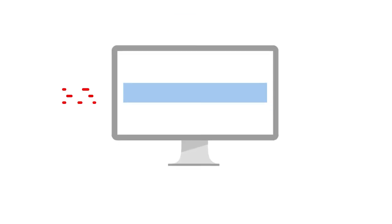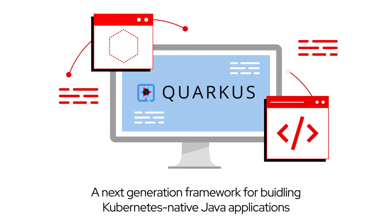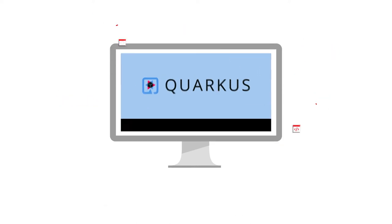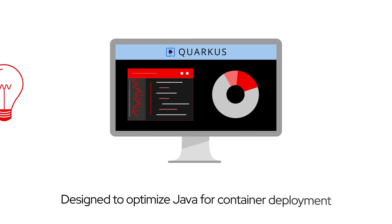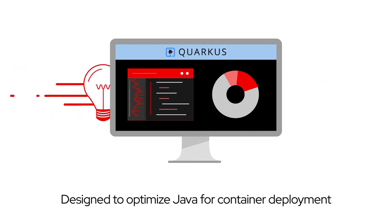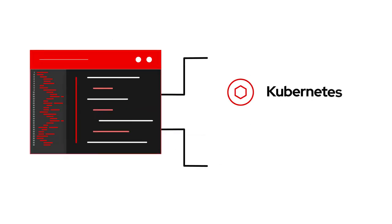Added to that, the Red Hat build of Quarkus is a next-generation framework for building Kubernetes-native Java applications. More than just a runtime, Quarkus is specifically designed to optimize Java for container deployment, with the goal of making Java a leading development framework for Kubernetes and serverless environments.